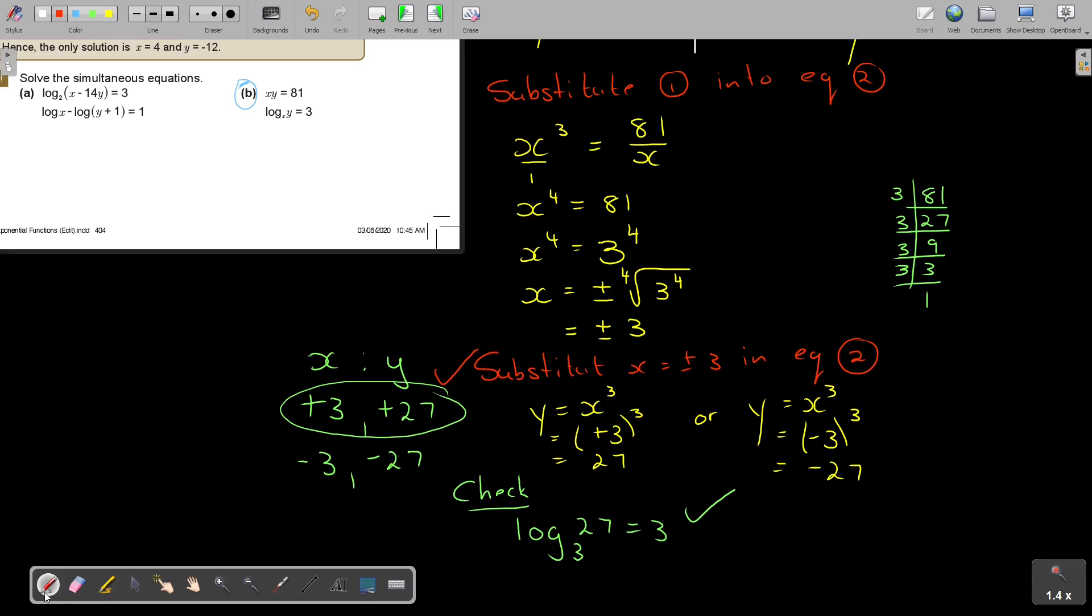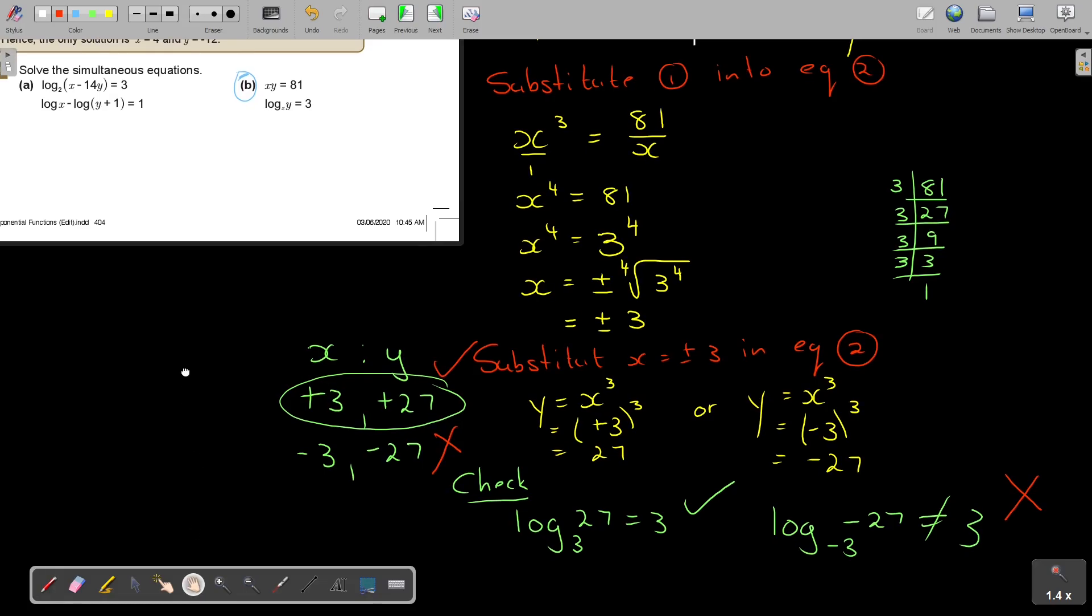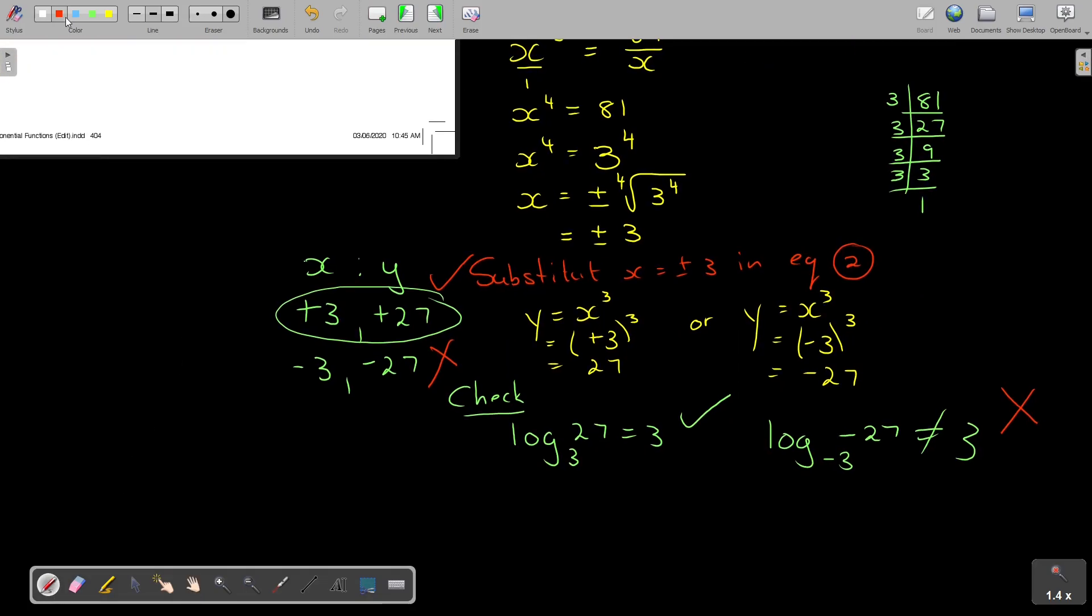But look what happens. If you are going to say, log, negative 3, negative 27. No, that's not going to be equal to 3. So that option is not going to work. And then you're going to end and say, therefore, the only solution when x is positive 3 and y is positive 27. And that's how you solve it.